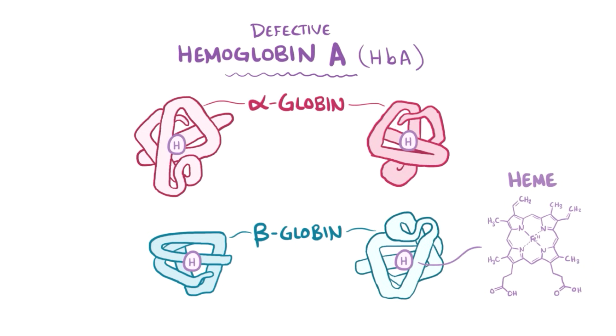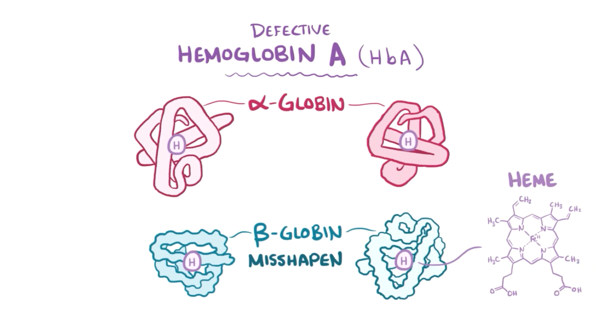Specifically, the beta-globin chains end up misshapen. This is because of a mutation in the beta-globin gene, or HbB gene.